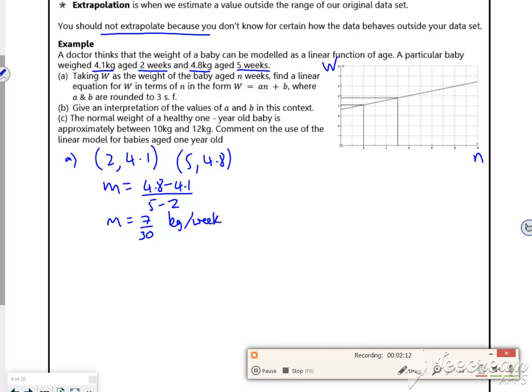Right so then we want where it crosses the x-axis. Does it give us some other information? Nah. So I'm going to use one of the points so if I use... What am I using? 2 comma 4.1. Y minus 4.1. 7 over 30. X minus 2. But it's not y and x is it? It's w and n. So really that should be w and n. So w and n.